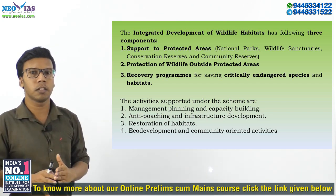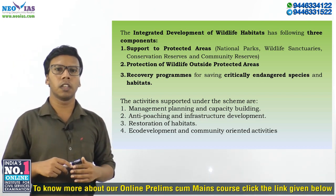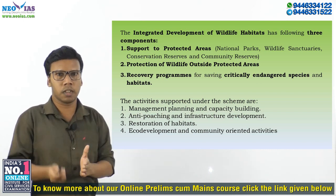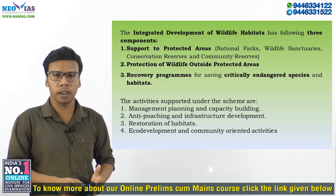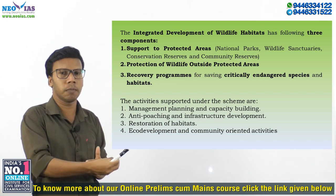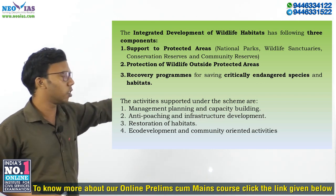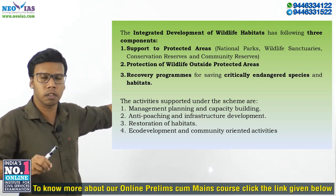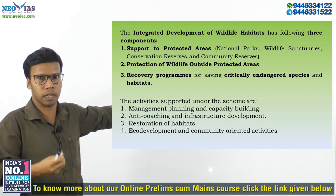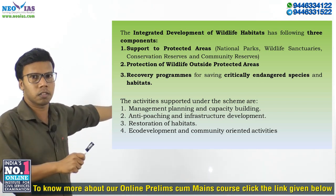The third component is recovery programs for saving critically endangered species and habitats. There are many critically endangered species — animals facing more threat of extinction. In order to recover critically endangered species from extinction, the third component provides a recovery program. We are not only saving the critically endangered species but also trying to save the habitat of those animals.